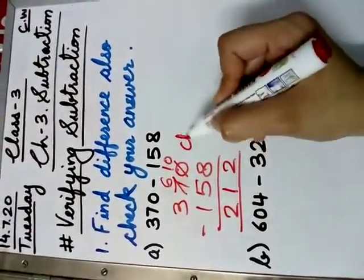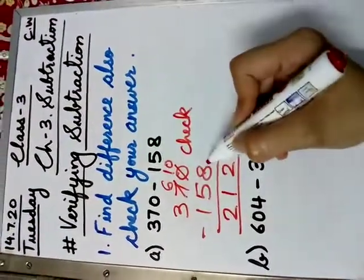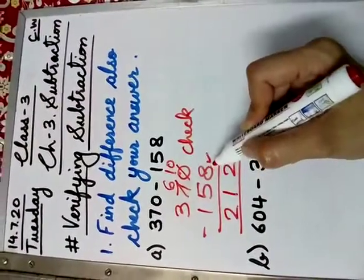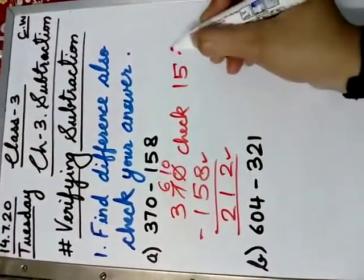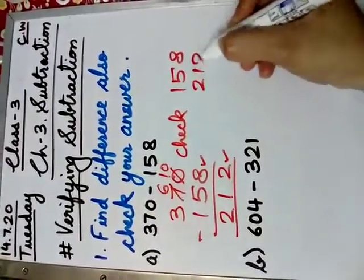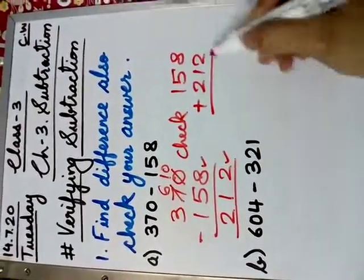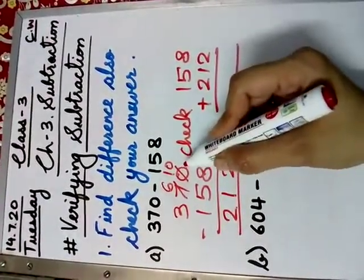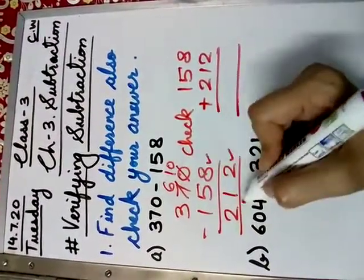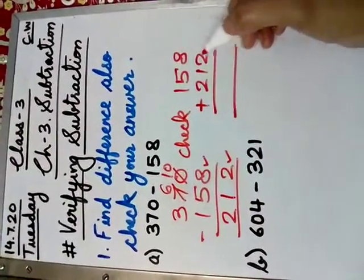Now, how to check? To check, you write the subtrahend and the difference. And add them. On addition, if the sum is the same as the minuend, that means your answer is correct. Let us do 8 plus 2.